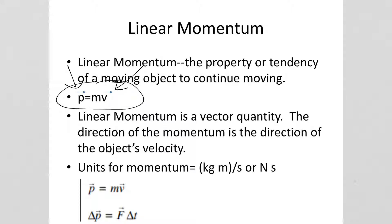The units for momentum are either kilogram times meters per second or newton times a second. Remember that mass is usually measured in kilograms and velocity is usually measured in meters per second, so kilogram meters per second.